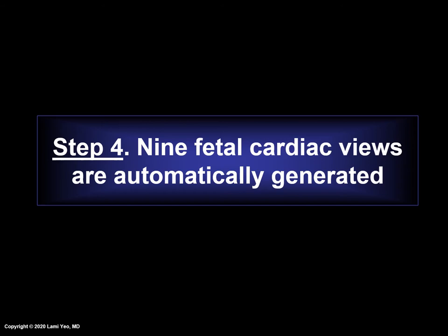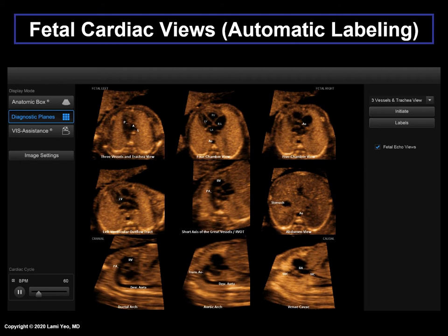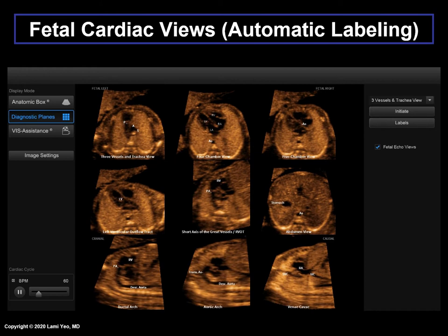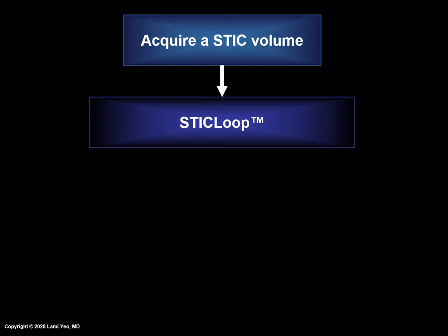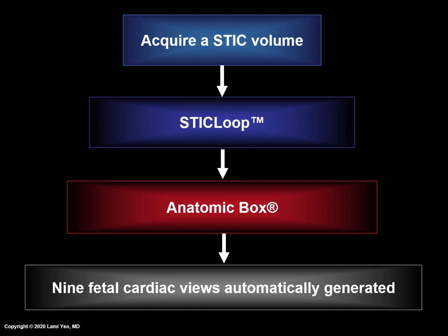After the marking process has been completed, the last step is that FINE will automatically generate and display nine fetal cardiac views simultaneously, which takes several seconds. In summary, FINE involves the following steps: acquire a STIC volume; the volume is converted to STIC loop, which is a two-dimensional cine loop; mark anatomical structures of the fetal heart using Anatomic Box; and finally, nine fetal cardiac views are automatically generated.